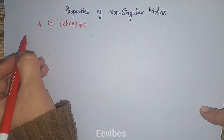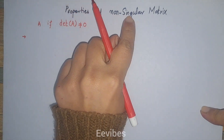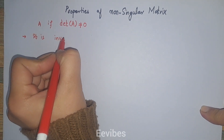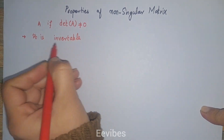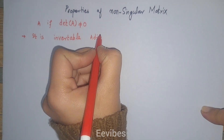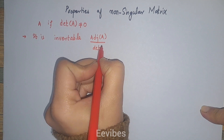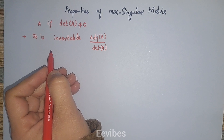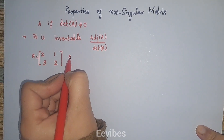The first property I will discuss is: if the matrix is non-singular, then it is invertible, which means we can find the inverse of this matrix by using the formula adjoint of A divided by the determinant of A. So let's consider an example matrix A, and here we can find the adjoint of A.